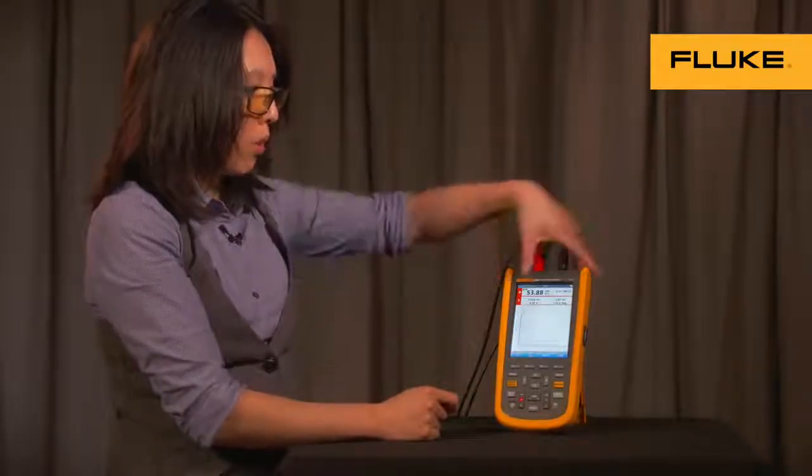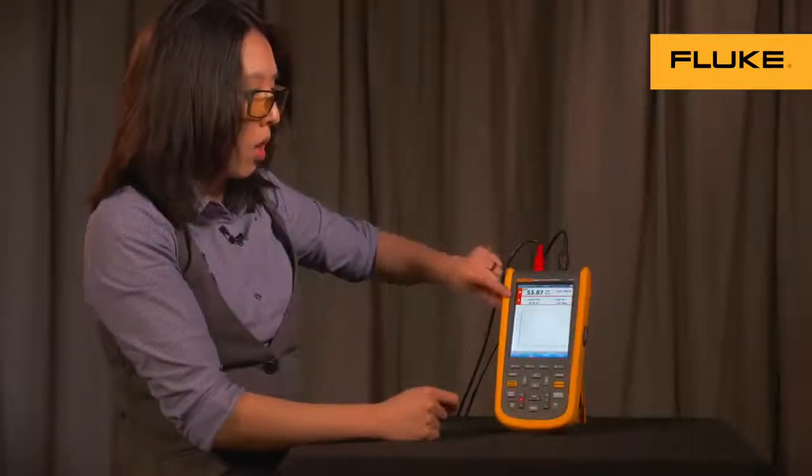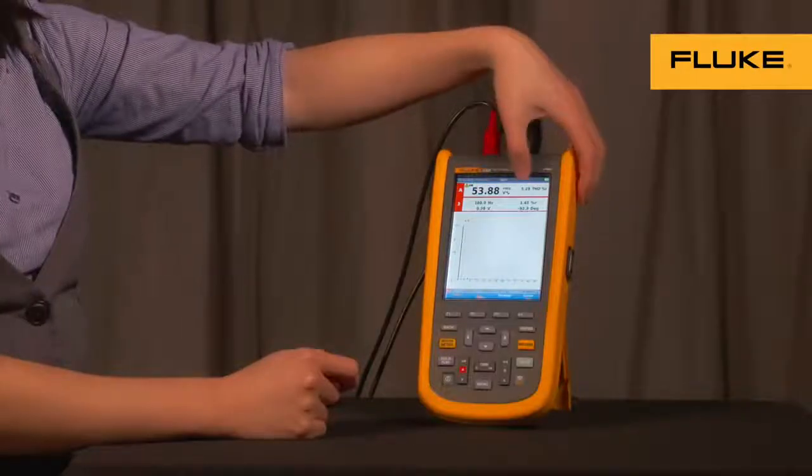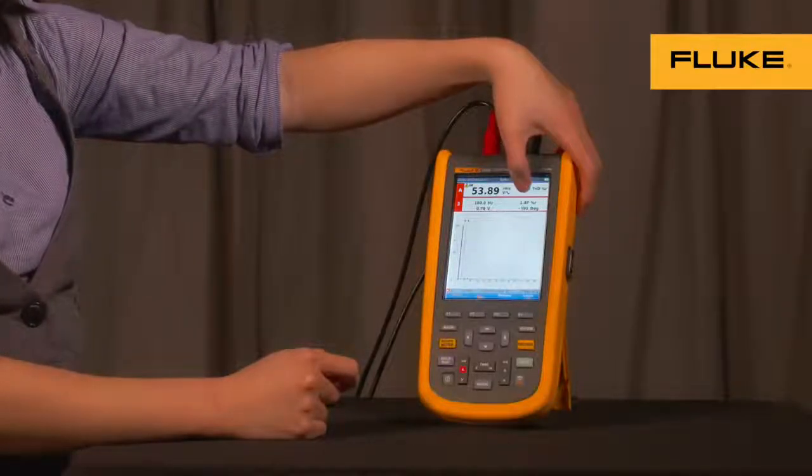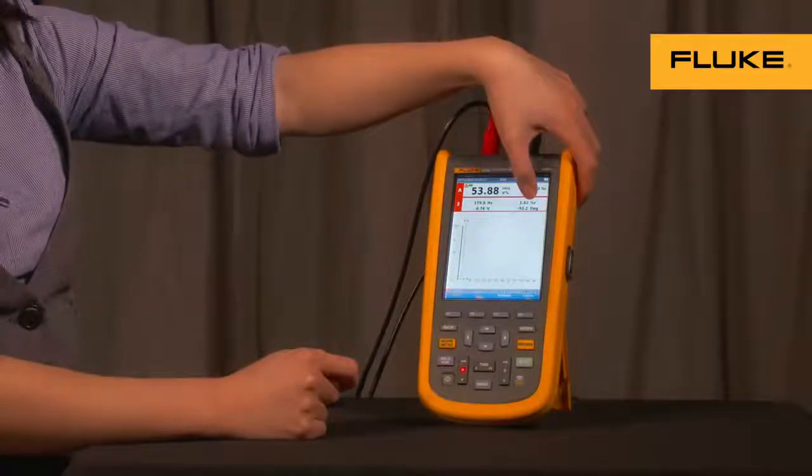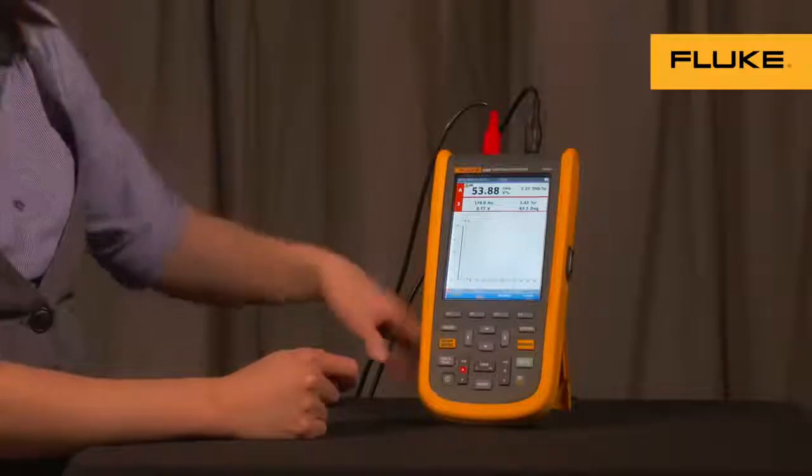Also in the screen, for this particular harmonic that you chose, you can also view its voltage, its frequency, its percent relative to RMS, and its phase angle displayed in degrees.